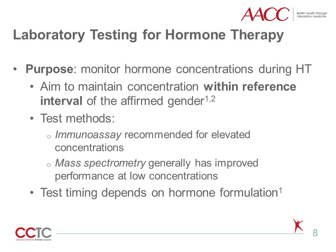The first objective of lab testing is to measure hormone concentrations. The Endocrine Society and WPATH guidelines recommend that physicians aim for concentrations within the reference interval for the affirmed gender. For example, in a trans man receiving testosterone or masculinizing therapy, the goal is to maintain testosterone concentrations within the physiological range observed in cis men. Hormones can be measured by immunoassay or mass spectrometry-based methods. Immunoassays are recommended when elevated concentrations are expected, while mass spectrometry-based assays generally have improved performance when quantifying low concentrations. The Endocrine Society guidelines recommend that hormones be measured every three months for the first year of therapy, followed by six- or 12-month intervals.